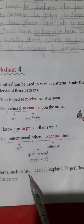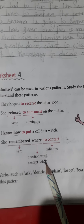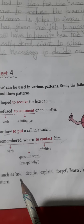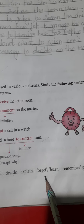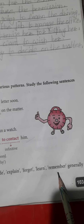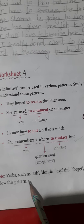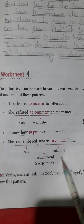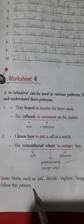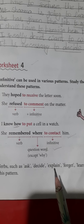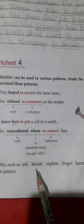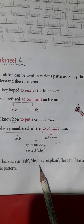We have various verbs which follow this structure of the sentence: ask, decide, explain, forget, learn, remember. These verbs follow this kind of sentence structure. For example, we can say: 'I decided to learn this lesson.'